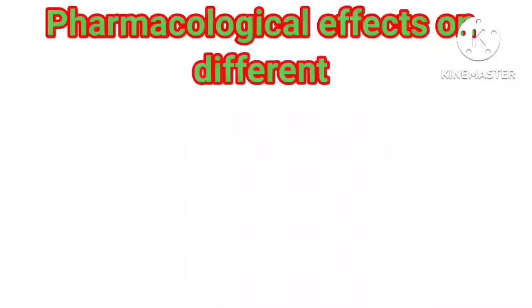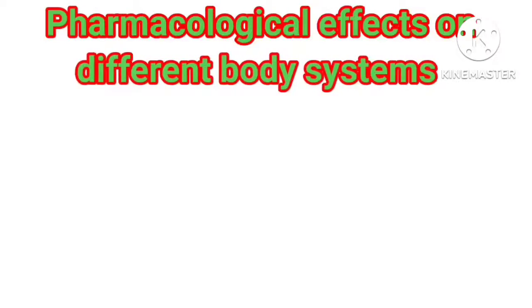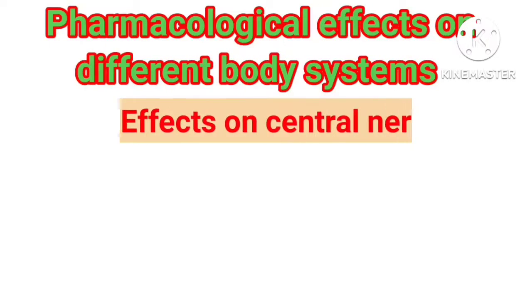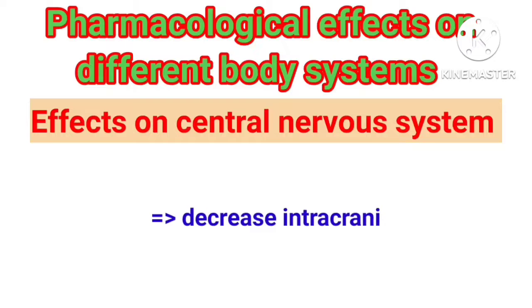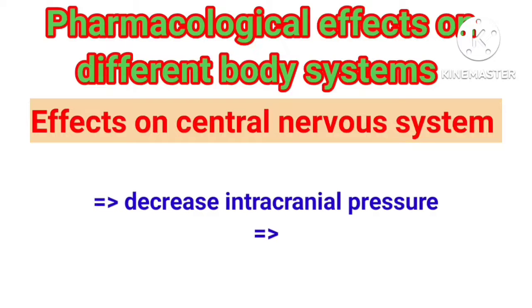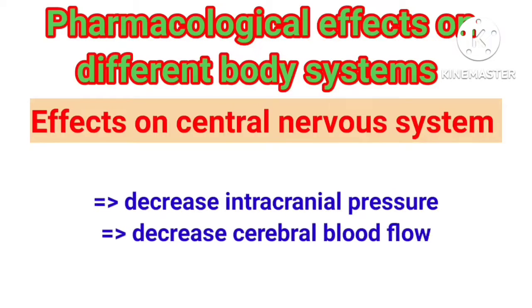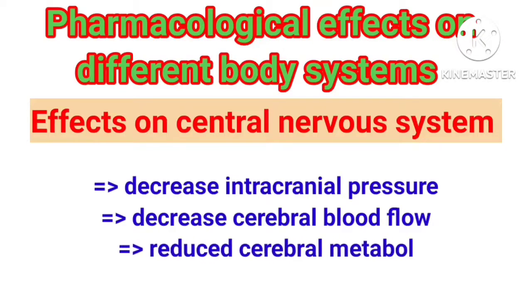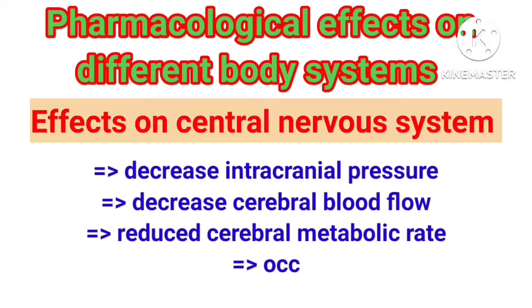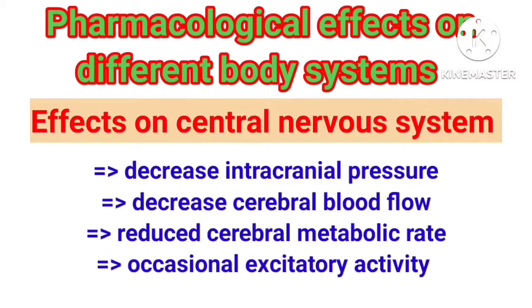Pharmacological effects on different body systems. Effects on the central nervous system: Propofol decreases intracranial pressure, decreases cerebral blood flow, reduces cerebral metabolic rate, and may cause occasional excitatory activity.